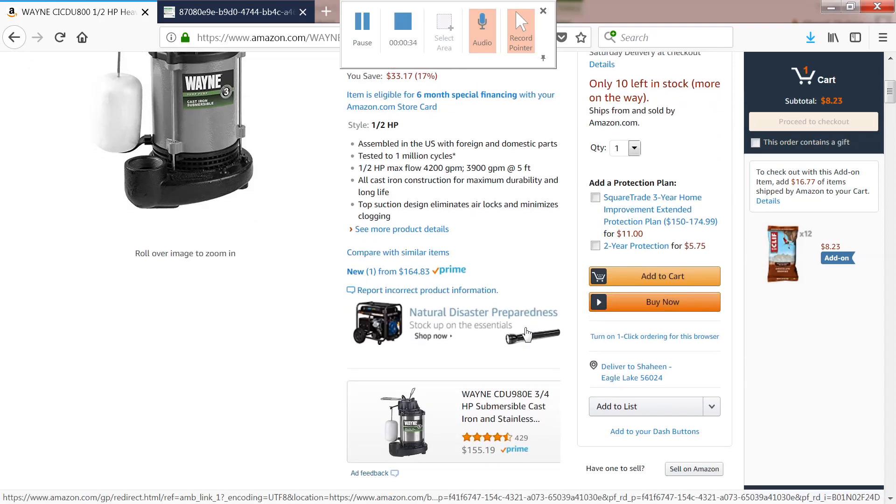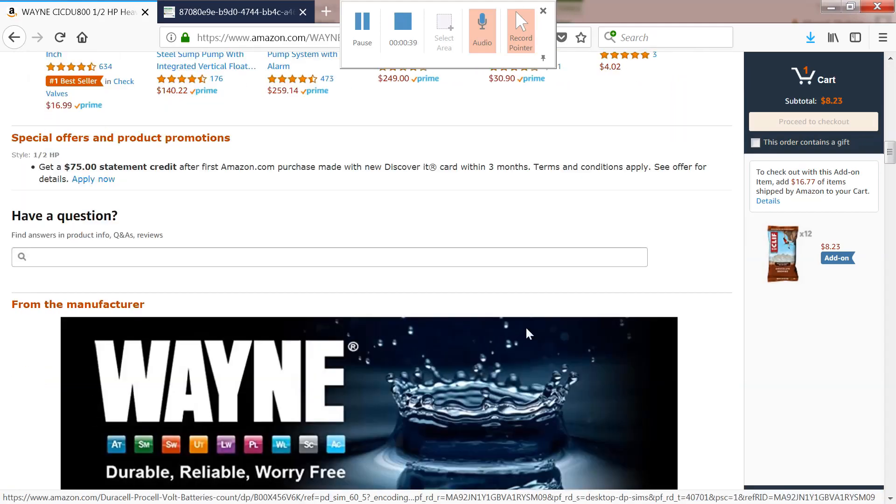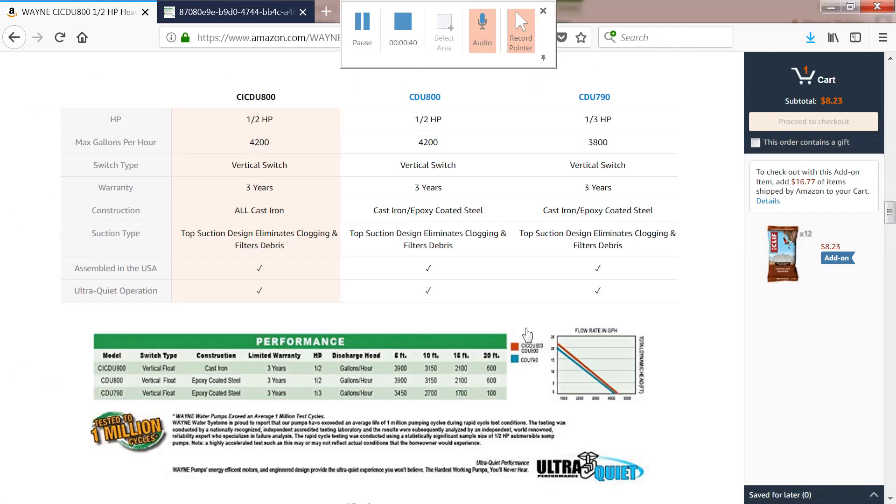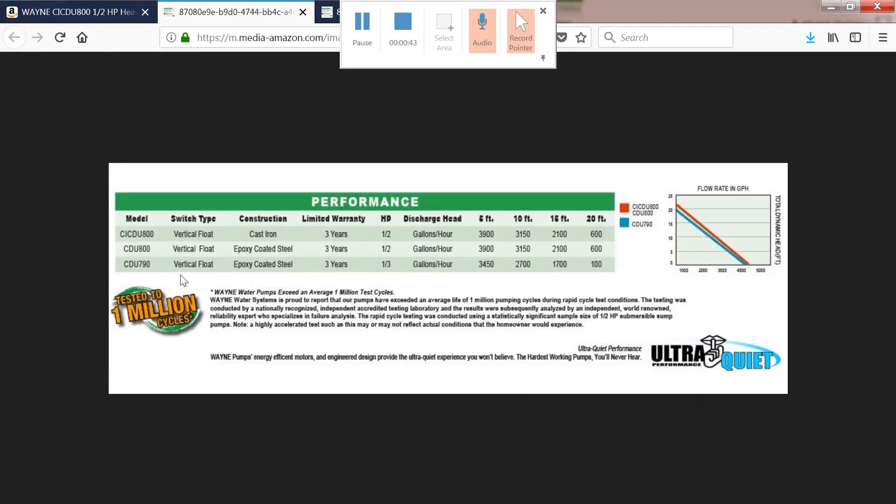Most houses use sump pumps. The performance criteria is given with the sump pump. This one is a Wayne Company pump, it's a half horsepower sump pump. It delivers about 3900 gallons per hour at 5 feet of head and 3150 gallons per hour at 10 feet of head. I used that 3150 at 10 feet of head.